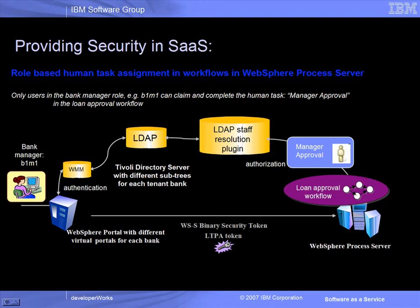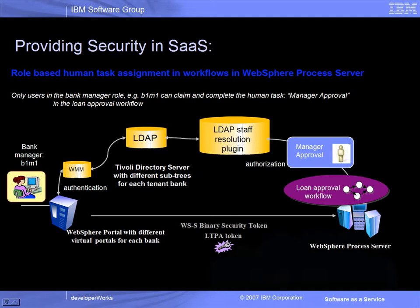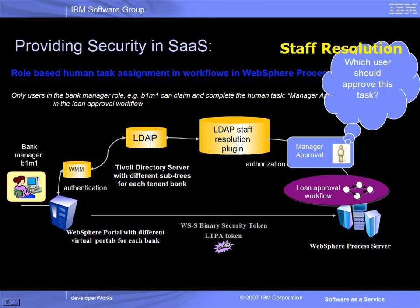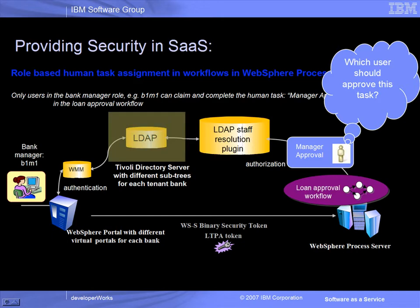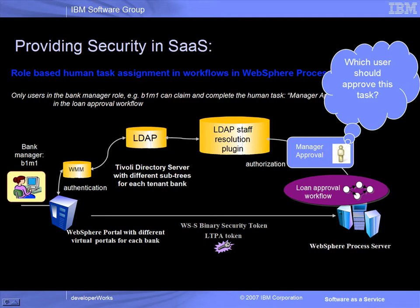The process of deciding who should work on a human task is called Staff Resolution. The LDAP Staff Resolution plugin provides access to organizational information that is stored in LDAP directories so that a human task is assigned to the appropriate owner in the multi-tenant LDAP user registry. In the banking application, we will demonstrate how the human tasks for approving a loan application in a BPEL process is assigned only to users in the roles Bank Employee and Bank Manager.